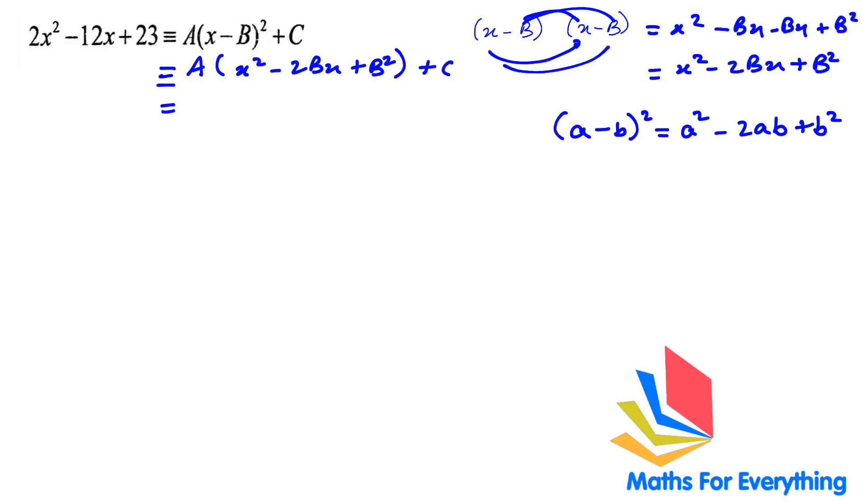Now multiply the a with all the terms inside. So ax² - 2abx + ab² + c.